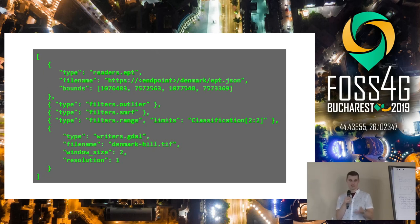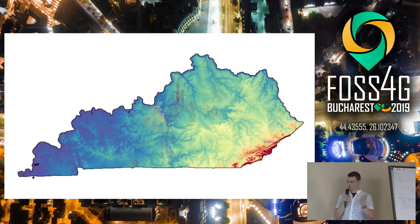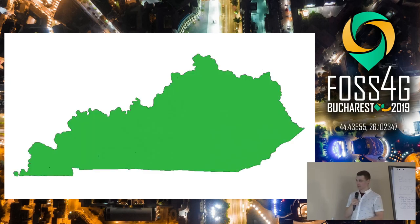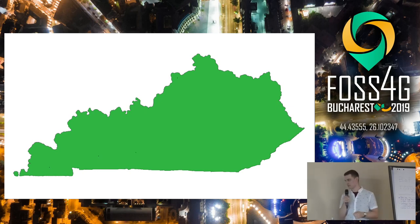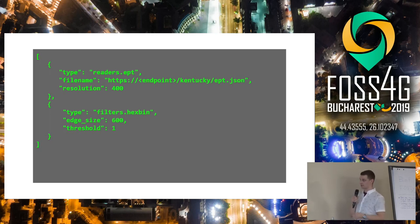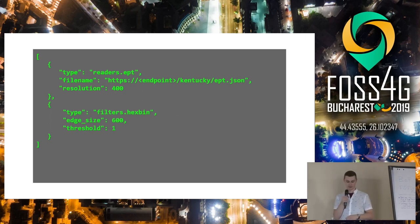Another example: this is the state of Kentucky, also about half a trillion points. How would you generate a reasonable boundary for it? You might think of taking headers from the files and mashing all the bounds together, but then you get jagged edges — not something you want as a user-facing footprint. This is also really easy with the EPT reader, because it's structured hierarchically by resolution. I'm querying points that are 400 meters apart, then using PDAL's Hexbin filter to create a hex boundary. That Kentucky set is multiple terabytes, and this takes about five or six seconds on my laptop.